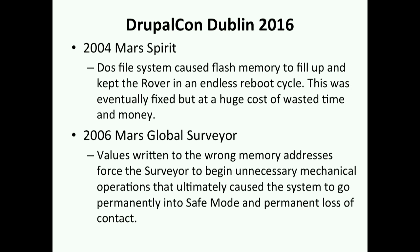The Mars Spirit in 2004: a DOS file system caused flash memory to fill up, keeping the rover in an endless reboot cycle — fixed a few weeks later at a huge cost of time and money, running into the millions. The Mars Global Surveyor: values written to the wrong memory addresses forced unnecessary mechanical operations, putting the surveyor into safe mode. It hasn't been contacted since, so when people walk on Mars, they can go visit it and manually reboot.